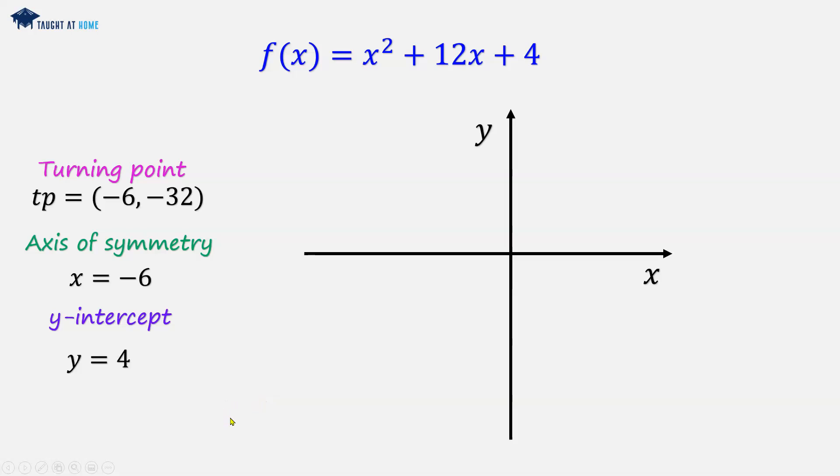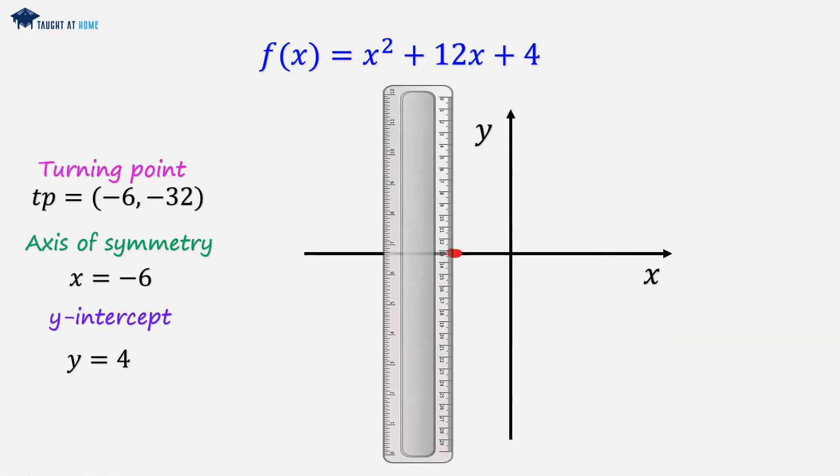So what we can do is first of all, I would mark the axis of symmetry on the x-axis. I would get a ruler. And then I would draw a light line, just a guiding line for the axis of symmetry.